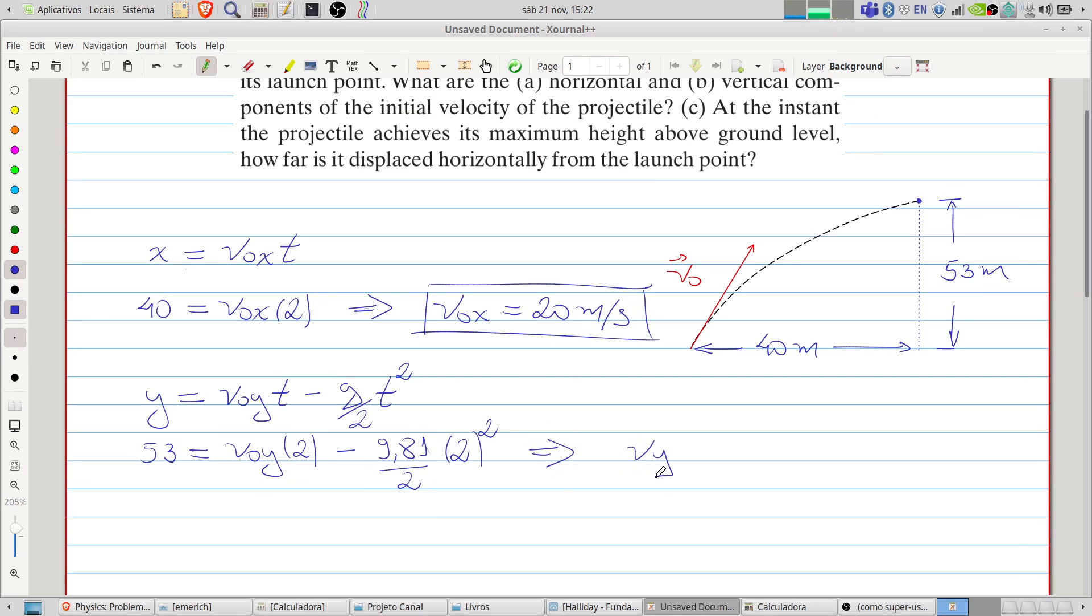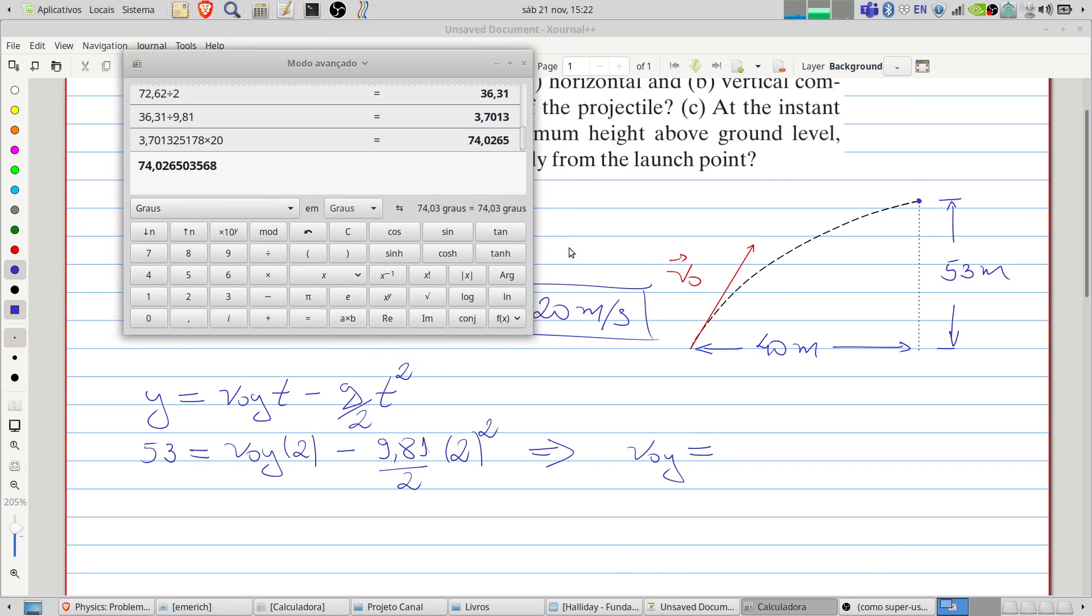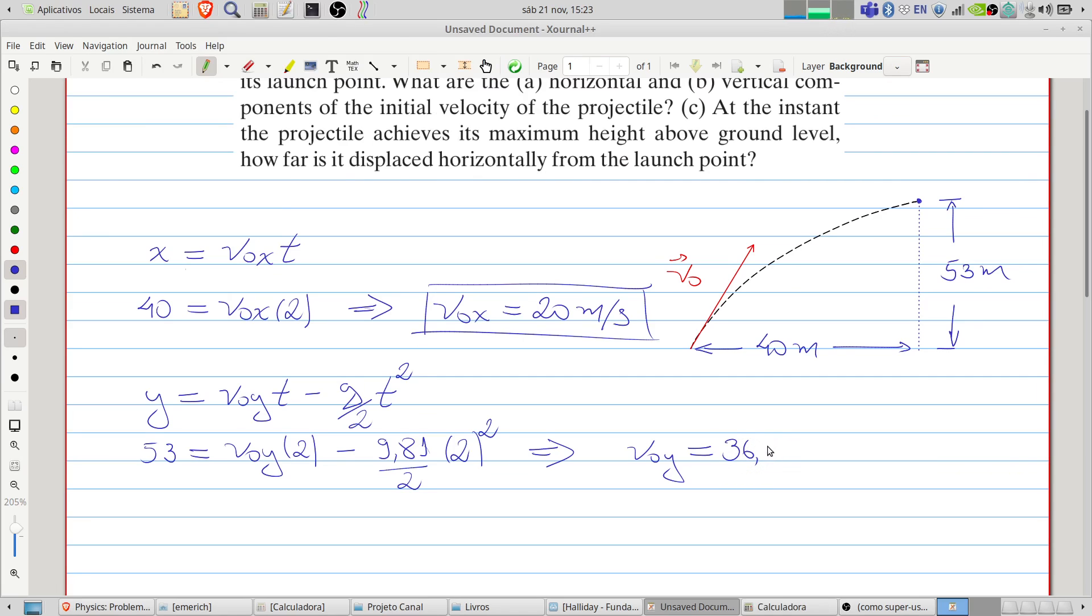Let's use our calculator. We will have 9.81 divided by 2 multiplied by 4 plus 53, this equals 72.62 divided by 2. So 36.31 meters per second, this is the component y of the initial velocity.